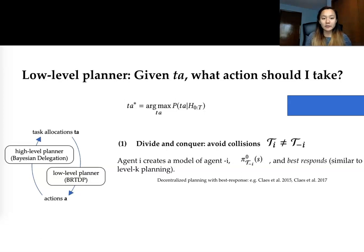Now onto our low-level planner. The question that the low-level planner is trying to answer is given TA, what action should I take? Now there are two main types of coordination problems that the low-level planner is trying to solve. One is the divide and conquer challenge where we want to avoid collisions given that our subtasks are different from each other. In this case agent i creates a model of the other agents and best responds to that.